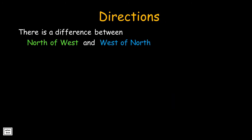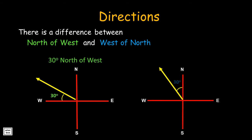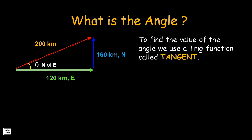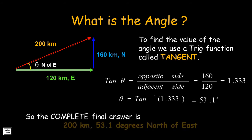Take note, there is a difference between north of west and west of north. To find the value of the angle, we can use the trigonometric function called tangent. The formula for tangent is opposite over adjacent. When we substitute and solve, we get 1.333. This means the value of angle theta is arctan of 1.333, which is equal to 53.1 degrees. Thus, the answer is 200 kilometers at 53.1 degrees north of east.